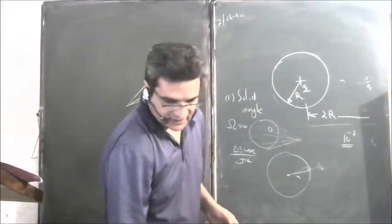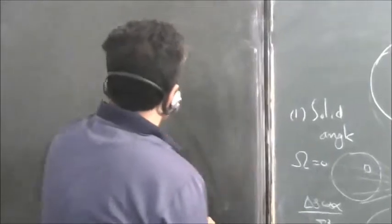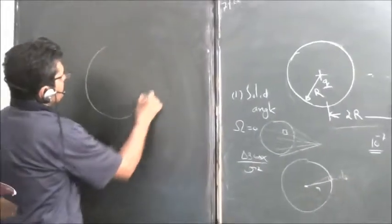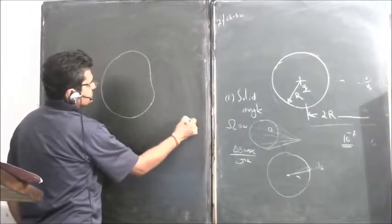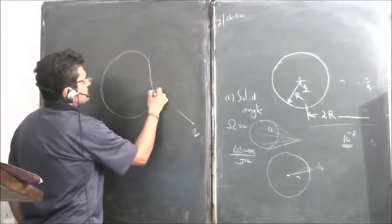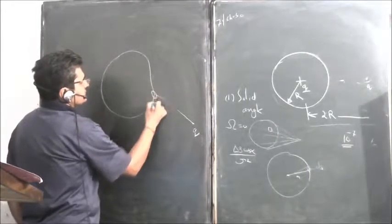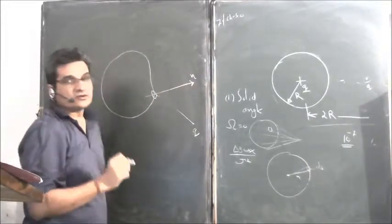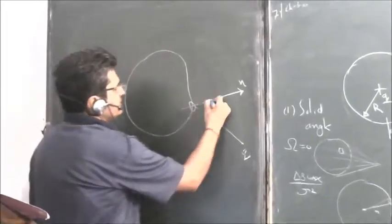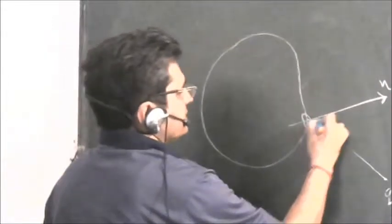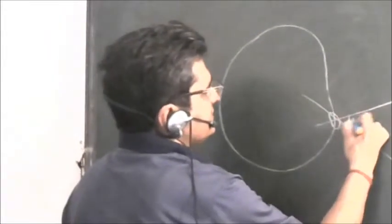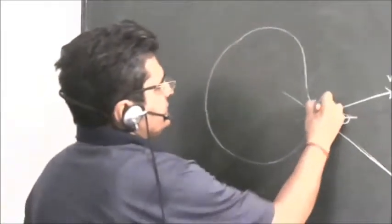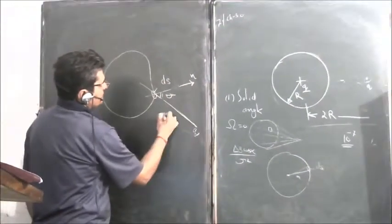Now let us find out what is the flux due to the charge which is outside the surface. Let us take some arbitrary surface and let there be some charge Q outside. Let this be the surface, small surface dS, and this is the area vector. Please note, for area we have to take area vector which is always perpendicular to the area. And this is R vector, angle between them is theta. This is dS, and here you have Q, this is R.